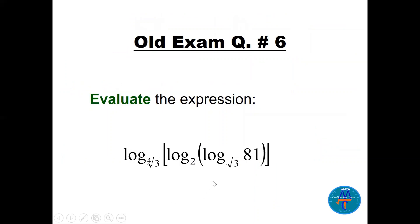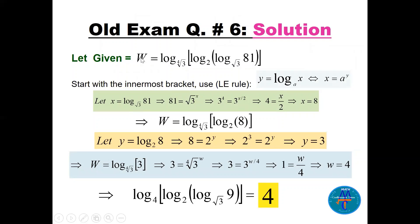Question six: find the value of the nested logarithmic expression. Call the whole expression W. Start with the innermost bracket: log base (square root of 3) of 81. Call this x. Using the LE rule: 81 equals (square root of 3) to the power x, so 3 to the fourth equals 3 to the (x/2). Therefore 4 equals x/2, giving x equals 8.